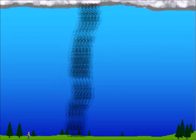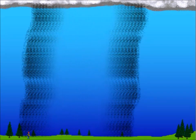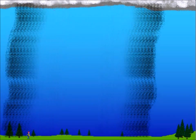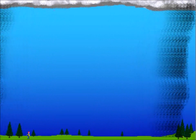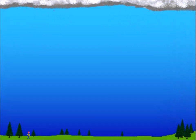Thunder is the sound that lightning creates as the air in the channel is heated and expands rapidly. If you count the number of seconds between the lightning and the thunder, and then divide by five, the result will tell you how many miles away the lightning was. Keep in mind though, if you hear thunder, you're likely within striking distance of the storm, and need to be counting from a safe place.